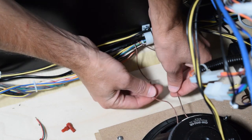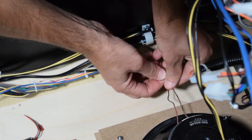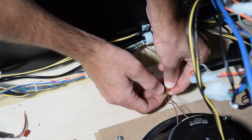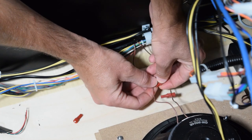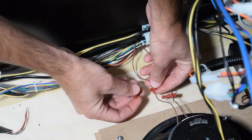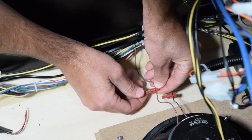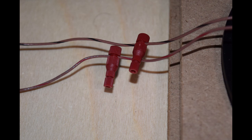Now push the large end of the Positap connector onto the wire using the channel on the connector. Then grab the middle section of the Positap connector and screw it onto the large end. You want to screw the connector on until it is snug, but do not over tighten it. Now repeat this process for the other wire. Here is how it should look once installed on the wires.